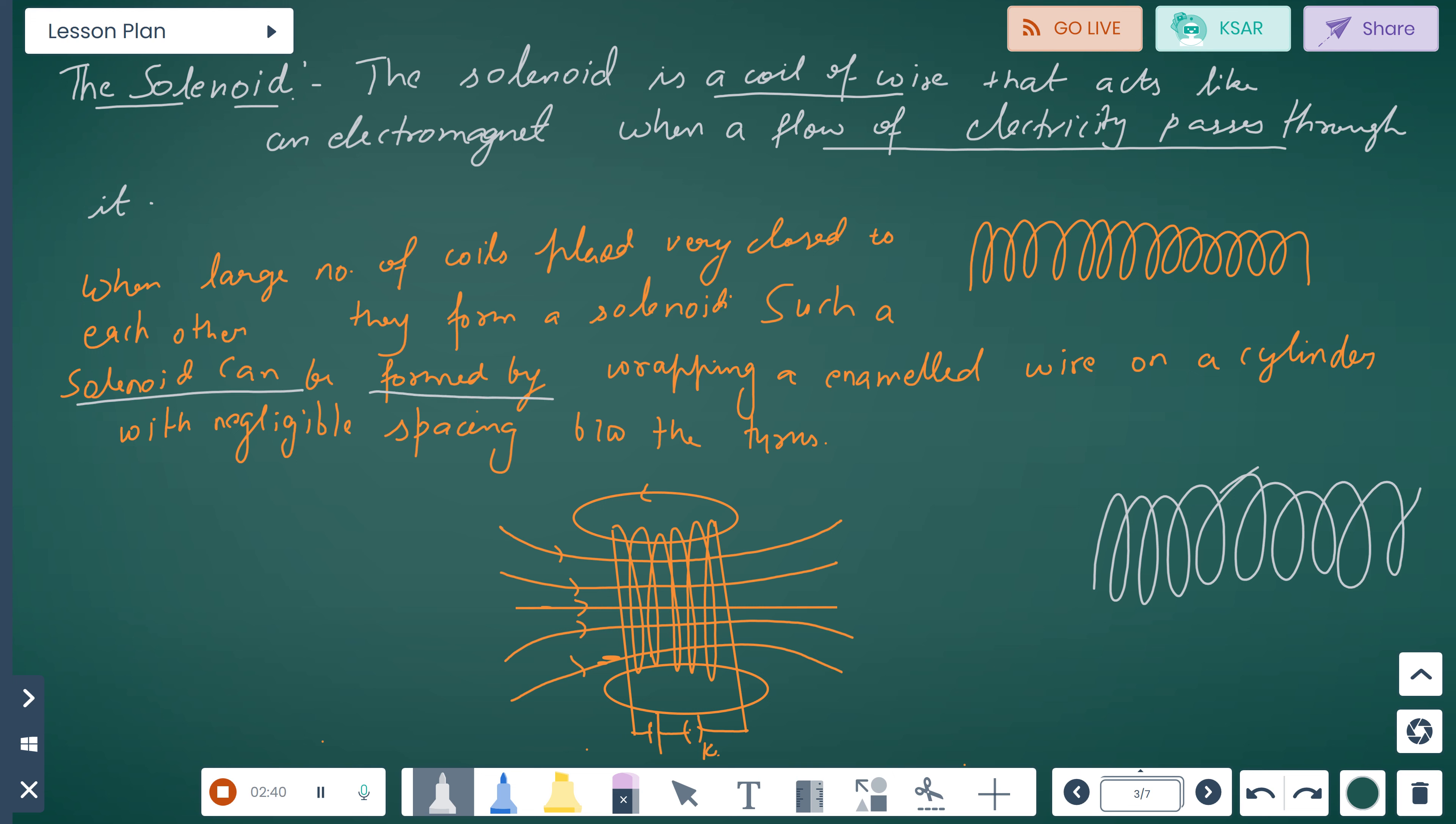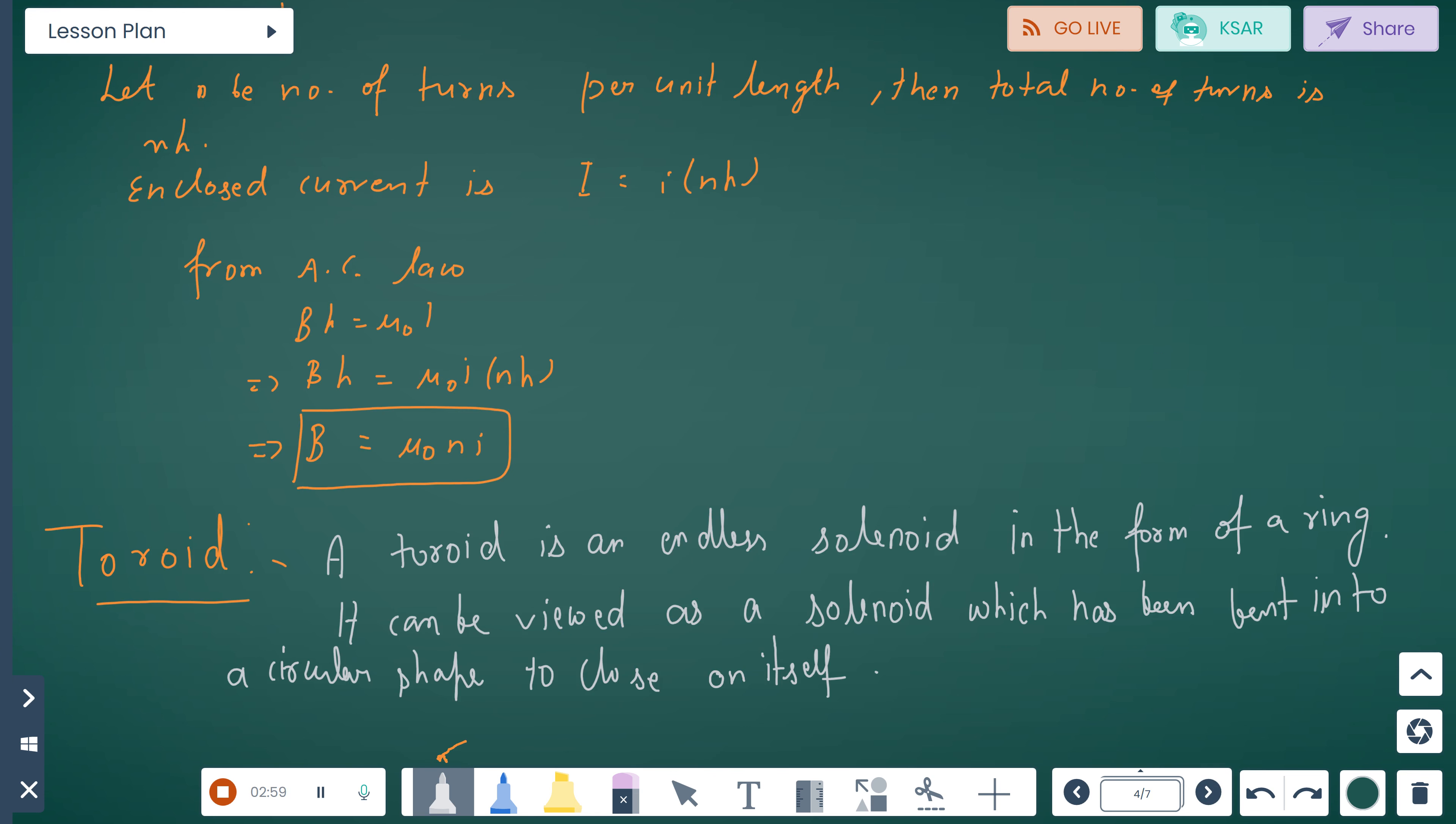Solenoid can be formed by wrapping an insulated wire on a cylinder with negligible spacing between the turns. Here we have a number of coils with negative and positive terminals. Now let n be the number of turns per unit length. Then the total number of turns is nH. So enclosed current is I = InH. From Ampere's law, BH = μ₀I. BH = μ₀InH. Then B = μ₀nI.